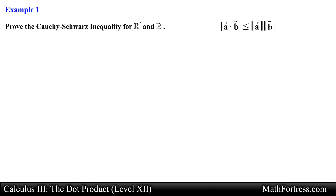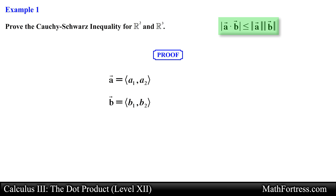Proof the Cauchy-Schwarz inequality for R squared and R cubed. This inequality plays an important role in different branches of modern mathematics. We can easily prove this inequality for the case where vector A and vector B are in R squared, the two-dimensional case, and R cubed, the three-dimensional case.